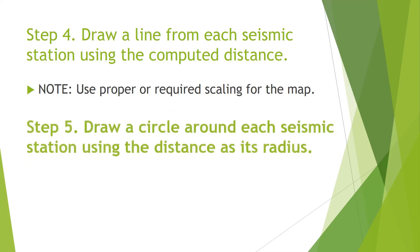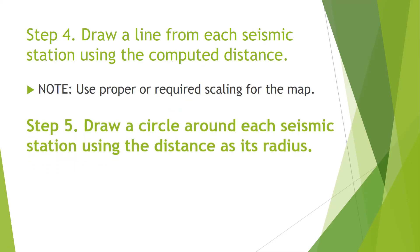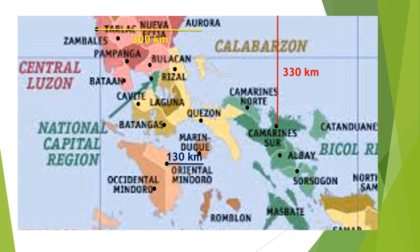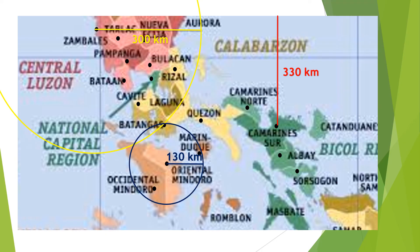Now draw a circle around each seismic station using the distance as its radius. Why a circle? Because we know the epicenter is 300 kilometers from Zambales, but we don't know in which direction — whether this direction, or that direction. To avoid confusion, we draw a circle with a 300-kilometer radius to show that the epicenter lies 300 kilometers around the point in Zambales. We do the same for Oriental Mindoro and Camarines Sur.